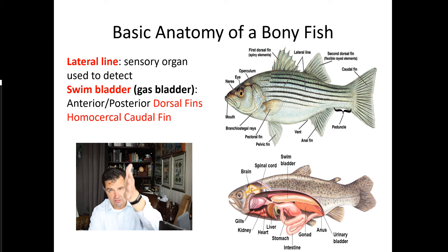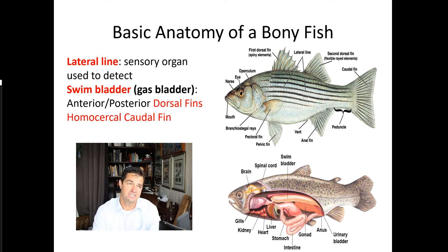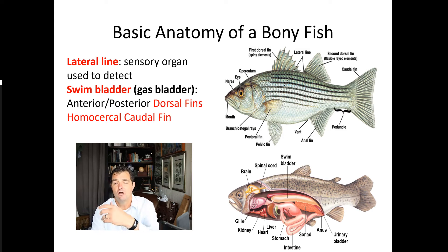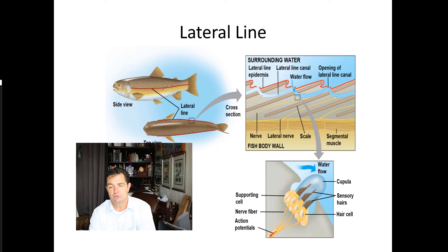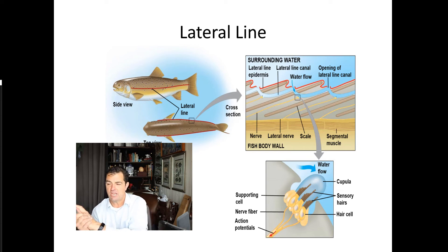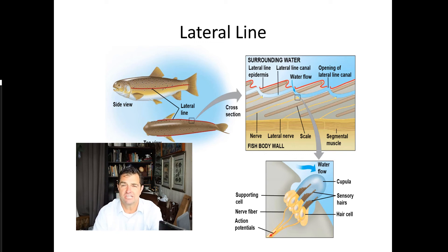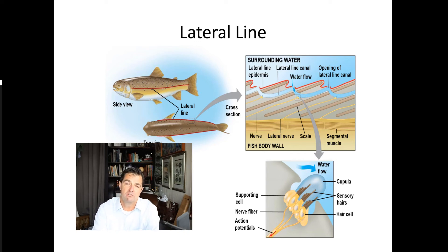Bony fish can sit in the water column at different depths without actively swimming. They have anterior and posterior dorsal fins, much like sharks, and a homocercal caudal fin — meaning the two lobes are roughly equal — unlike the heterocercal caudal fin of sharks. Here's a close-up of the lateral line: sensitive cupules with microscopic hairs that respond to pressure changes and send nerve signals to the brain.